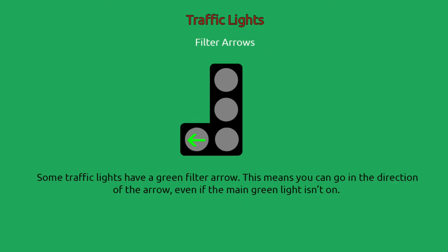Filter arrows: some traffic lights have a green filter arrow. This means you can go in the direction of the arrow even if the main green light isn't on.